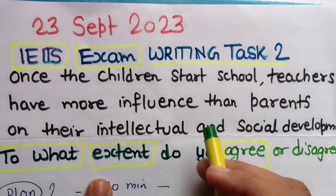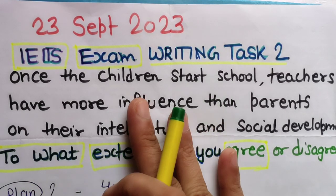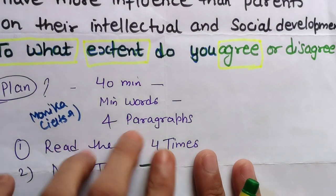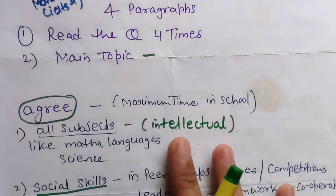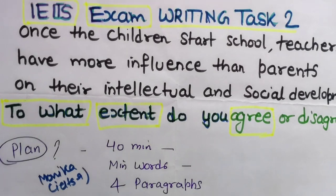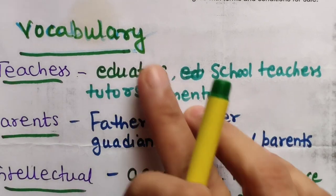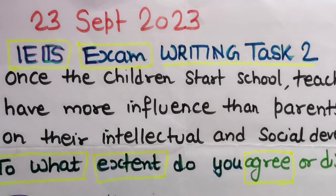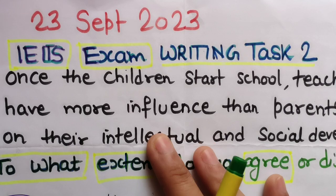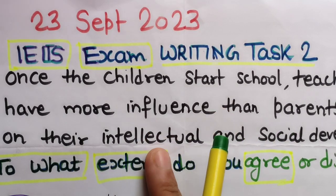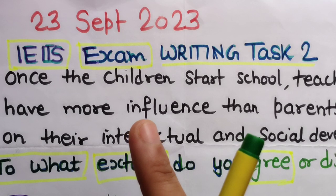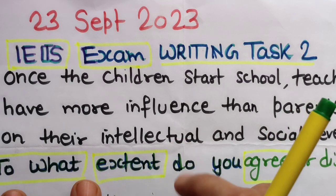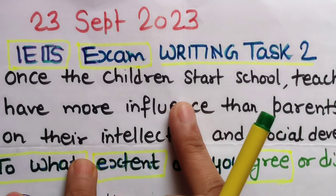In this video I am going to show you how to plan everything. I will explain how to do brainstorming and of course vocabulary — we will discuss vocabulary for these four words you can see. We will also discuss how to write the introduction, conclusion, body paragraph one, body paragraph two, and of course the contradiction point.